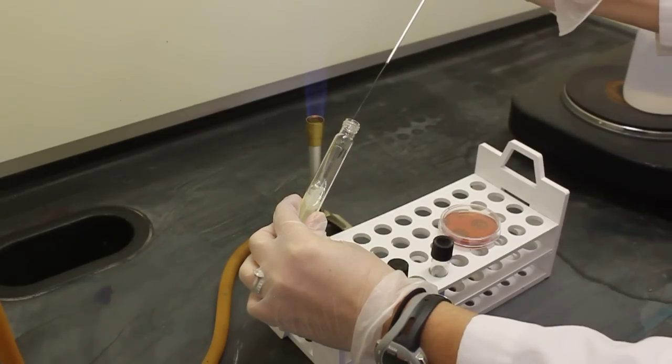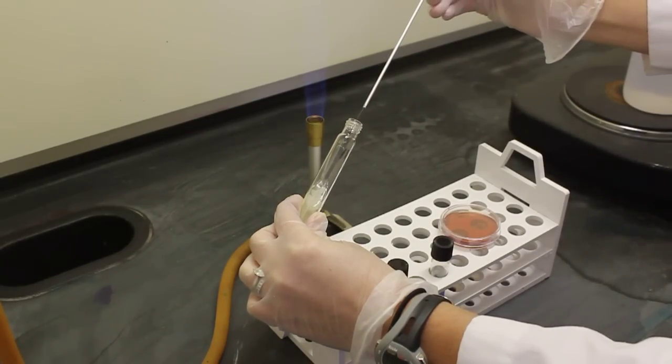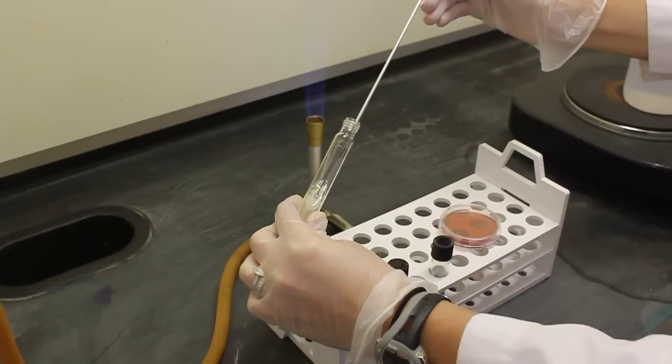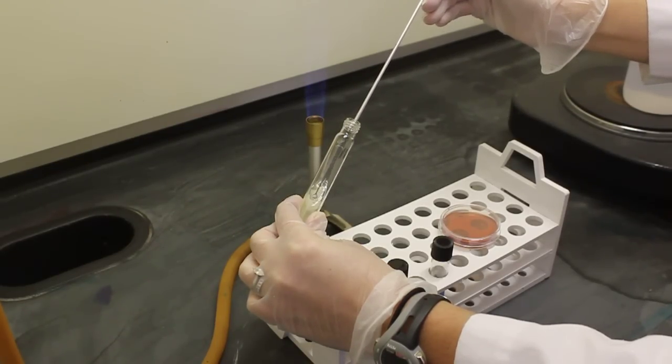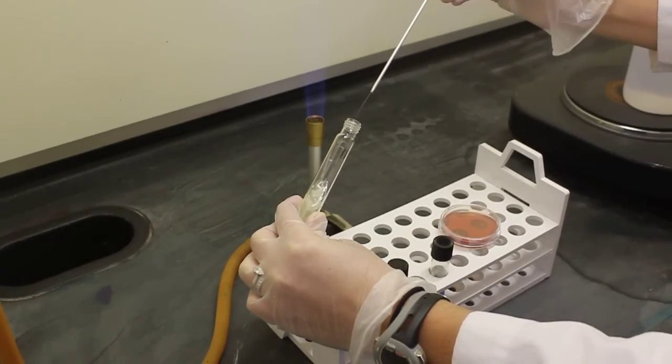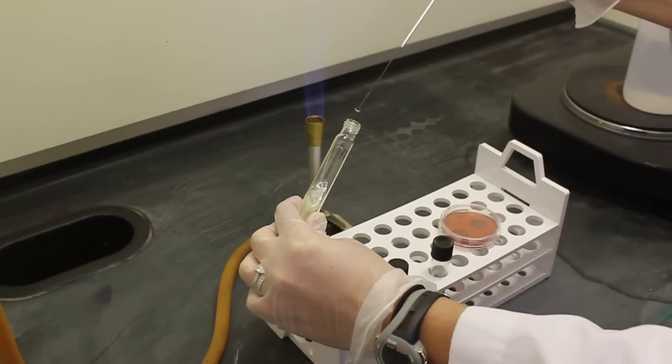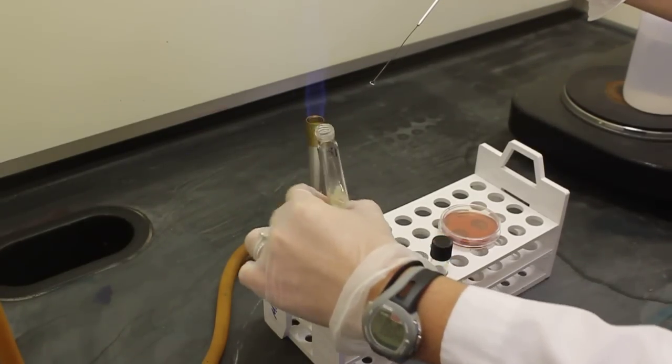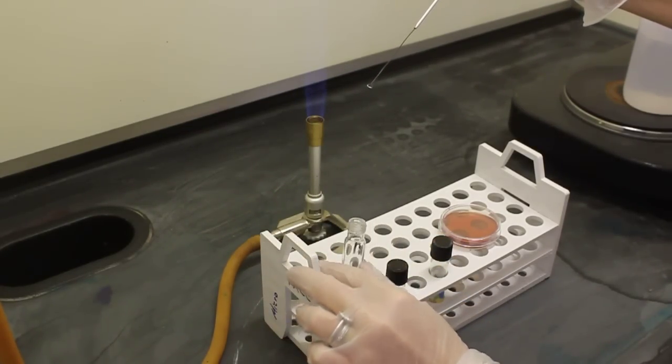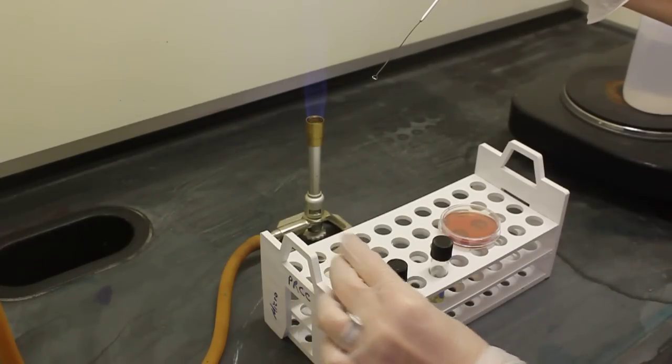Now that my loop is sterile, I will dip into my stock culture just touching the top where the bacteria is. I do not dig down into the media. Notice I do not touch the sides of the tube as I come out. Sterilize the stock culture lid.